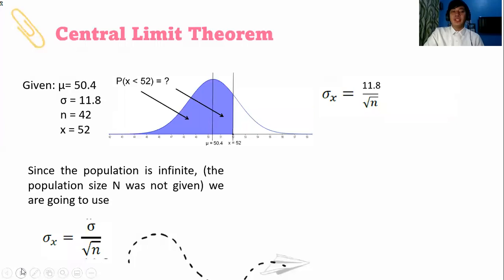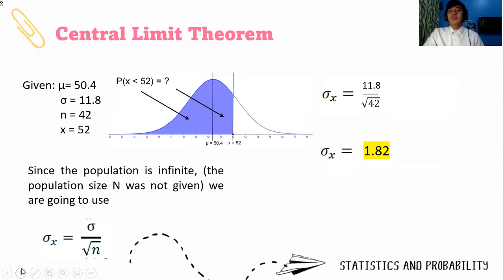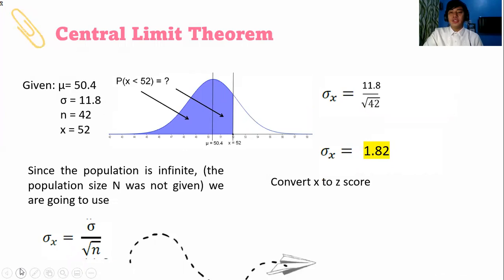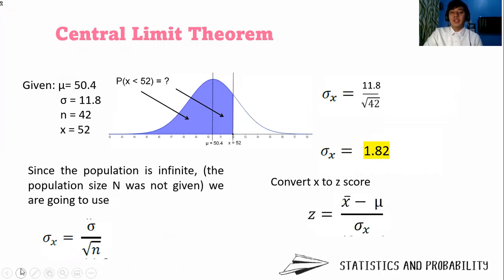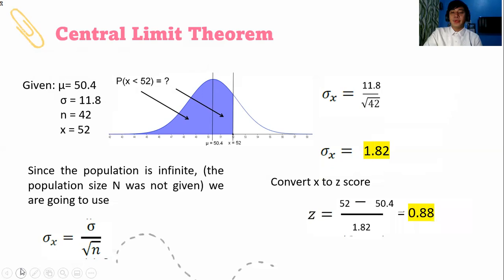Substitute 11.8 for σ and the square root of 42 for the denominator. When you use the scientific calculator, it will give you 1.82. Let us convert the x score into a z score. Z equals x̄ minus μ over σ sub x̄. Substitute: 52 minus 50.4 divided by 1.82. The final answer is 0.88.